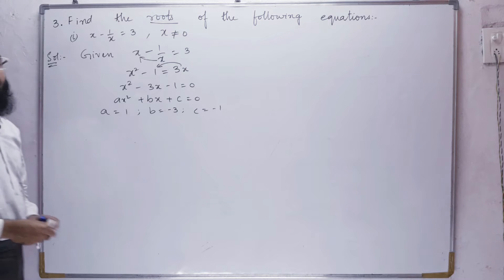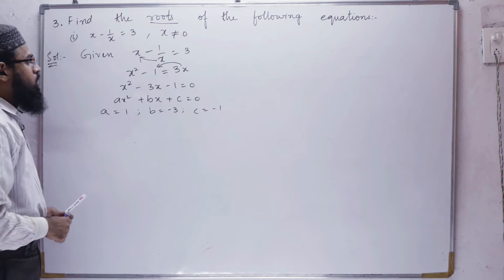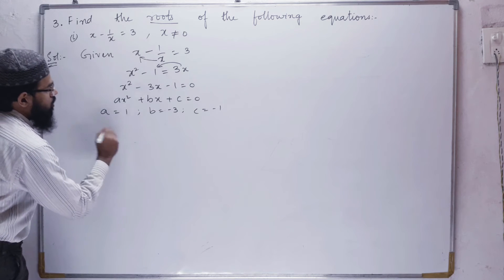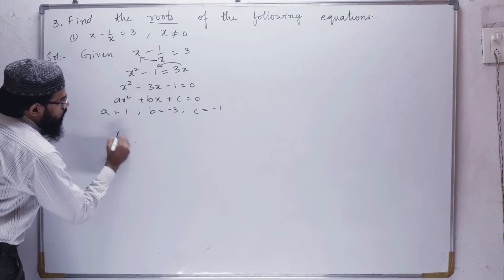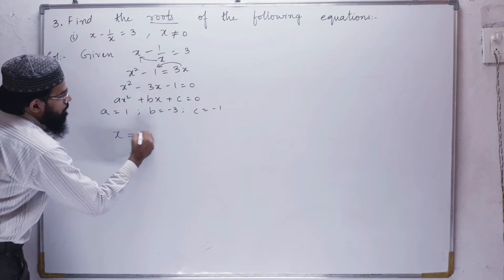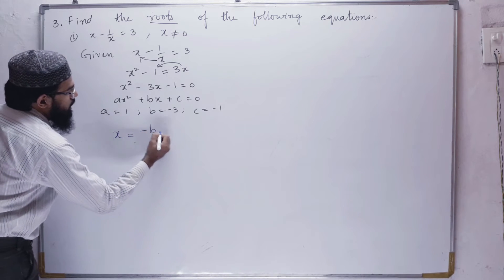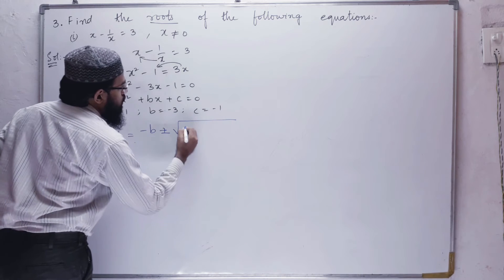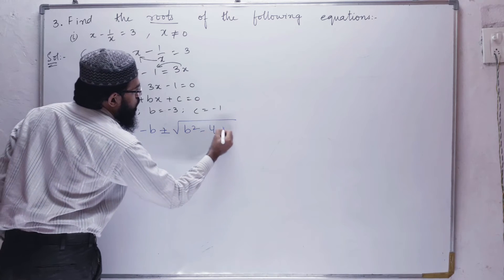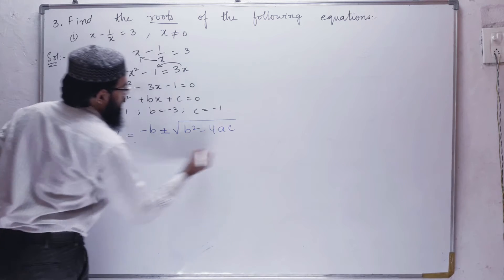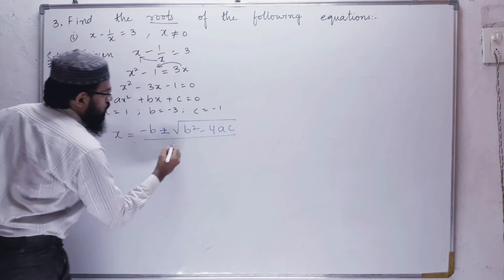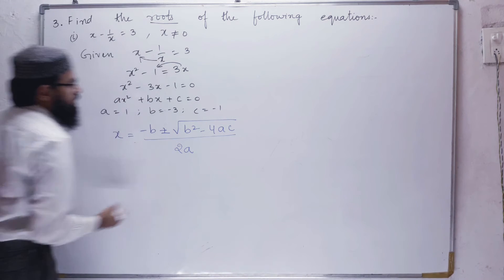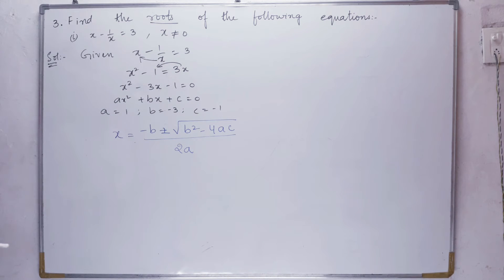We know the quadratic formula: x is equals to minus b plus or minus under root of b squared minus 4ac, all divided by 2a. Here 2a equals 2.